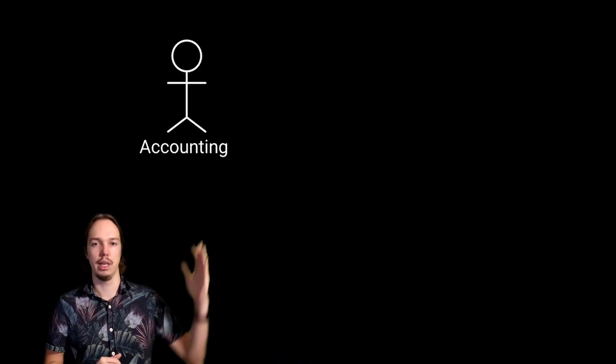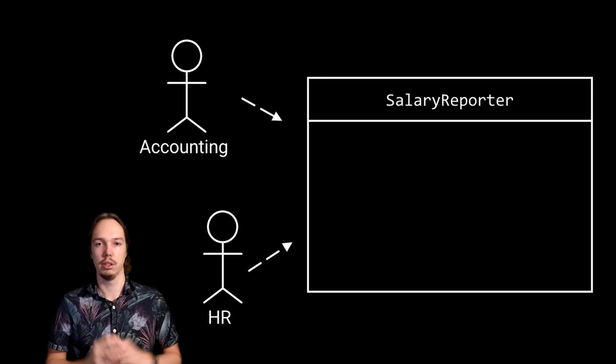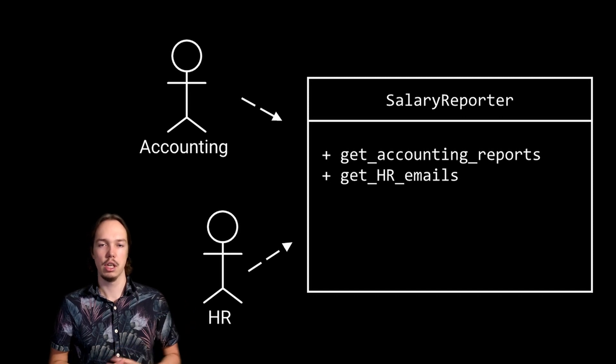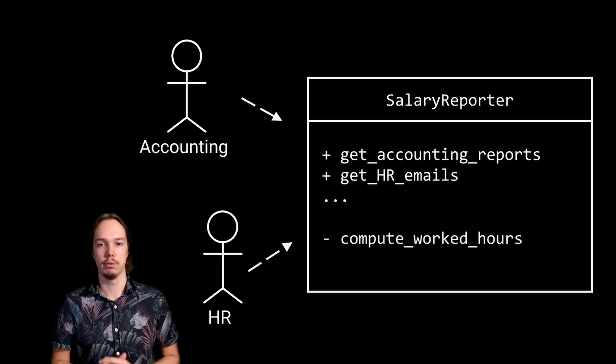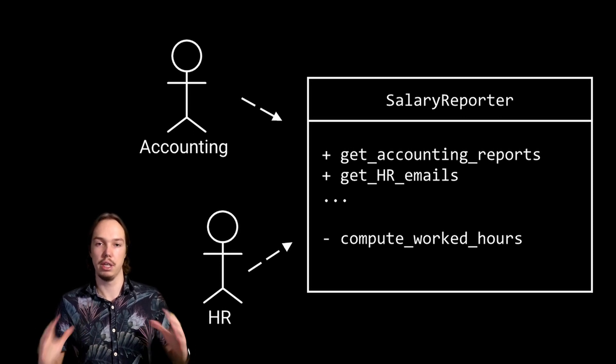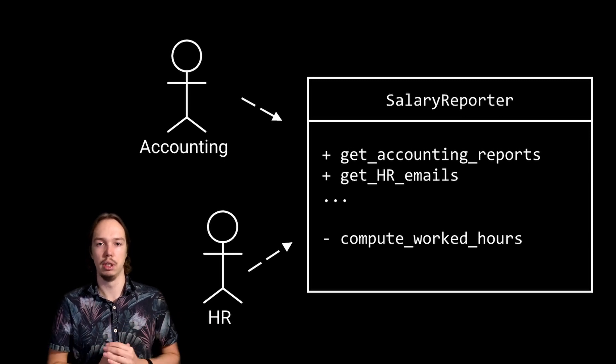So what would happen if we just put everything in one module? Both these types of reports and emails operate on the exact same data, so you might be tempted to put it all in one module. Let's draw up a diagram. We have two actors — accounting and HR — and a single module serving both. This module offers two public functions, one for each actor, and a number of private functions that support them. For example, it might have functions to retrieve the time employees clock in and out, and a function to compute the worked hours. You build your system this way and are happy to have avoided code duplication — you test it, ship it, and the customer starts using it.